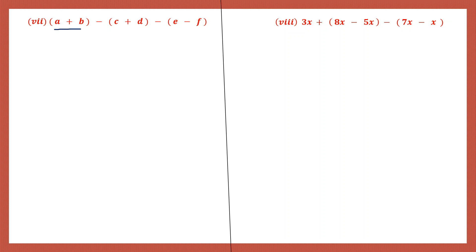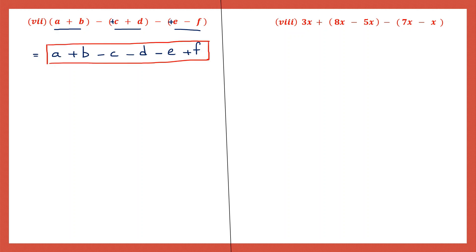Question 7: we have a plus b in brackets, c plus d, and e minus f in brackets. Let's open the brackets. Here it's going to be a plus b. Now here we have minus, so let's be careful to change the sign of all the terms: plus c becomes minus c, plus d becomes minus d. Again we have minus before the brackets: plus e becomes minus e, minus f becomes plus f. Now we have opened all brackets. As you can see, we have only one of each variable - a, b, c, d, e, and f - so since they're all unlike terms I cannot add or subtract them. So my answer is a plus b minus c minus d minus e plus f.